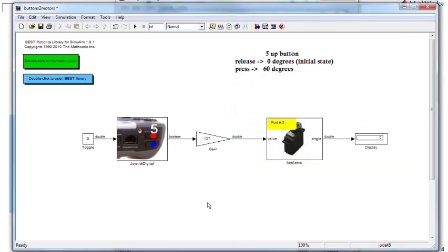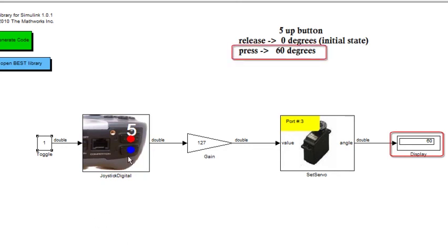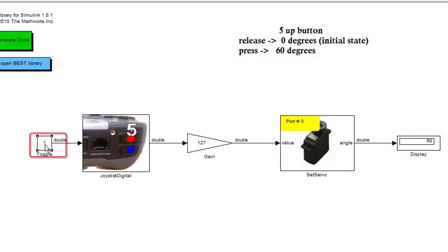When I set the gain to positive 127 and run the model by clicking the start simulation button, when I change the toggle value to 1 — meaning the button is pressed — you will see that the Set Servo angle value is now set to 60 degrees. This means button 5 Up is pressed and the servo motor has rotated by 60 degrees. When I release the 5 Up button, toggling the value back to 0, the angle goes to 0 degrees. Toggle 1: 60 degrees. Toggle 0: 0 degrees.